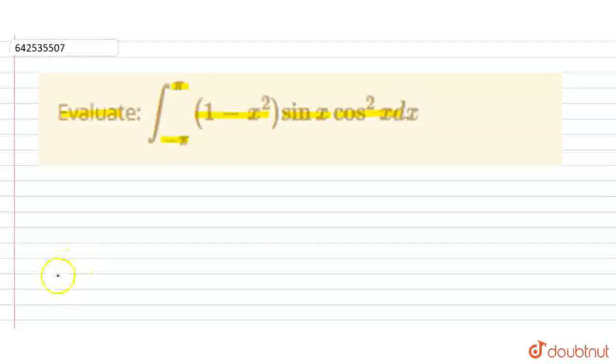Let's evaluate this question. Let integral minus pi to pi (1 minus x square) into sin x cos square x dx. So, this is the question.